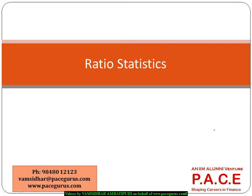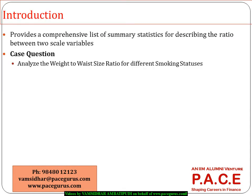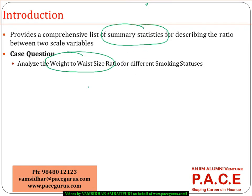Or I can use the ratio statistics procedure of SPSS. It provides a comprehensive list of summary statistics for the ratio between two variables. For example, if I want to analyze the weight-to-waist-size ratio for different sets of people, I have weight as one variable and waist size as another variable in the data.